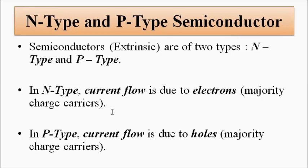Because electrons and holes flow in opposite directions, this affects the polarity of the induced voltage — the polarity will be opposite for n-type and p-type semiconductors. By noticing this polarity we can determine whether the specimen is n-type or p-type. For more on semiconductor basics, including n-type and p-type fabrication and properties, please check the earlier videos on this channel.